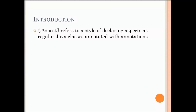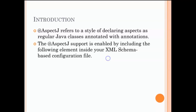AspectJ refers to a style of declaring aspects as regular Java classes annotated with annotations. When you are creating AspectJ AOP code, we will be writing normal regular Java classes and these classes will be annotated with annotations. But before we start writing code and creating our classes and annotating them with the different annotations, the first and foremost important thing is we need to declare in our configuration file that we will be using the annotation approach to implement our AOP. We need to enable this support for AspectJ in our configuration file.